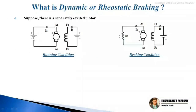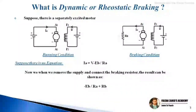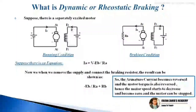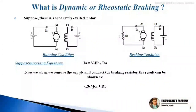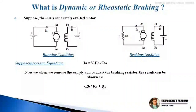In dynamic or rheostatic braking, we disconnect the supply and connect the braking resistor. The equation for armature current is: Ia = (V - Eb) / Ra. When we remove the supply and connect the braking resistor, this becomes: Ia = -Eb / (Ra + Rb), because the voltage is removed and the braking resistor Rb is added in series with Ra.